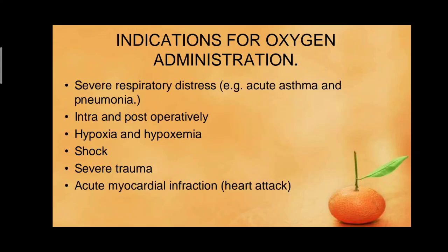Now, the indications of oxygen administration — in which patients and for which conditions. Number one, severe respiratory distress such as acute asthma and pneumonia; intra- and post-operative situations, because the patient cannot take enough breath. Then hypoxia and hypoxemia — low level of oxygen in the blood or tissues or cells. Then shock, severe trauma, and acute myocardial infarction. In all these conditions, the patient cannot breathe properly or complete the oxygen supply to the body, so oxygen must be given from an outside source.